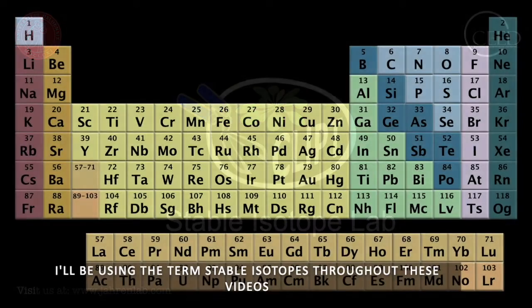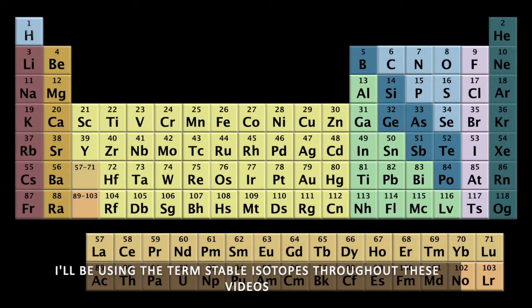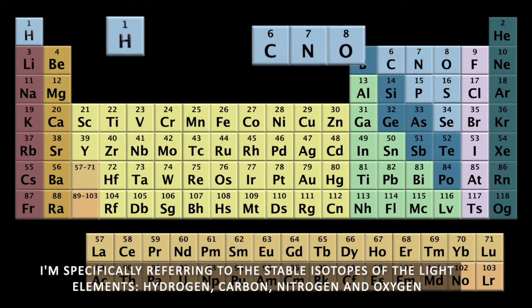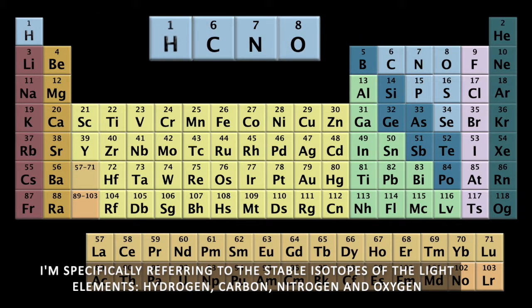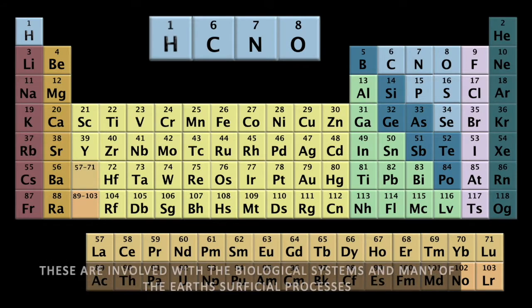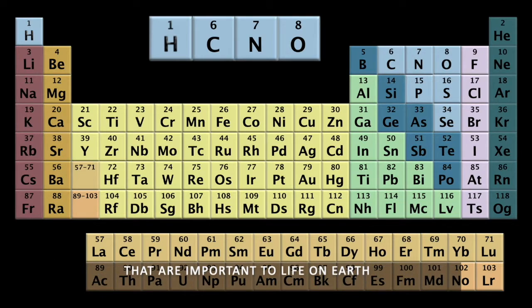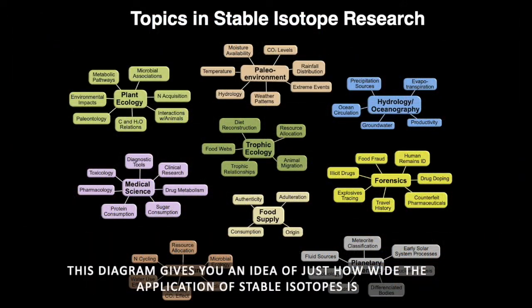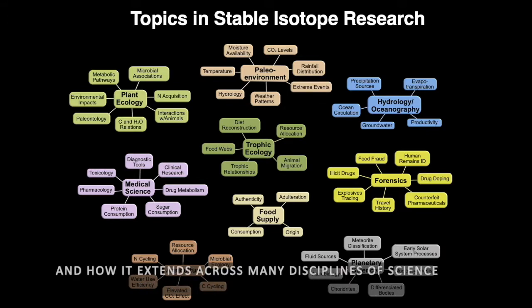I'll be using the term stable isotopes throughout these videos. I'm specifically referring to the stable isotopes of the light elements: hydrogen, carbon, nitrogen, and oxygen. These are involved with biological systems and many of the Earth's surficial processes that are important to life on Earth. This diagram gives you an idea of just how wide the application of stable isotopes is and how it extends across many disciplines of science.